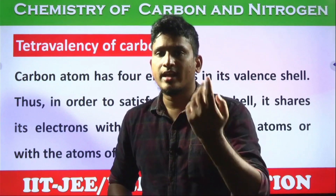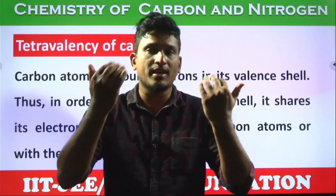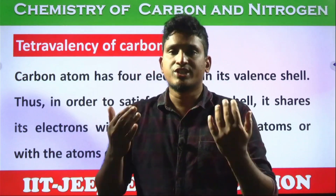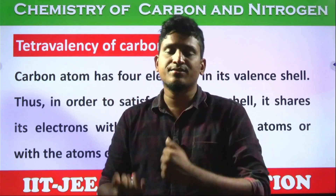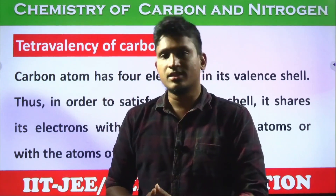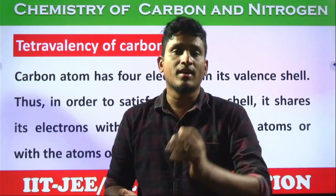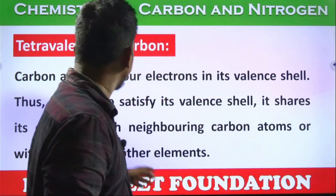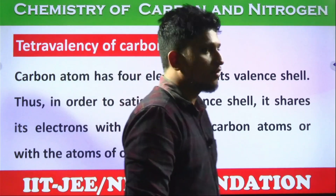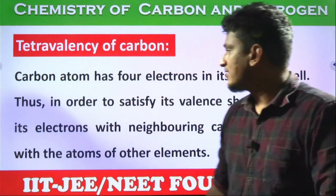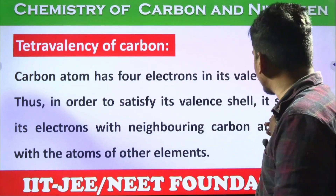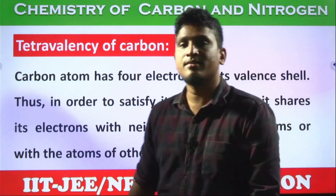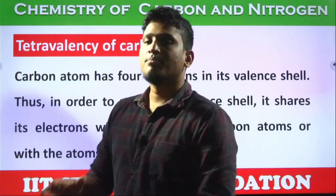Carbon has four electrons and needs four more to satisfy the octet rule, so it shares its four electrons to achieve the nearest noble gas configuration. The valency of carbon is four. Carbon atom has four electrons in its valency shell, and to satisfy this valency it shares its electrons with neighboring carbon atoms or with atoms of other elements.